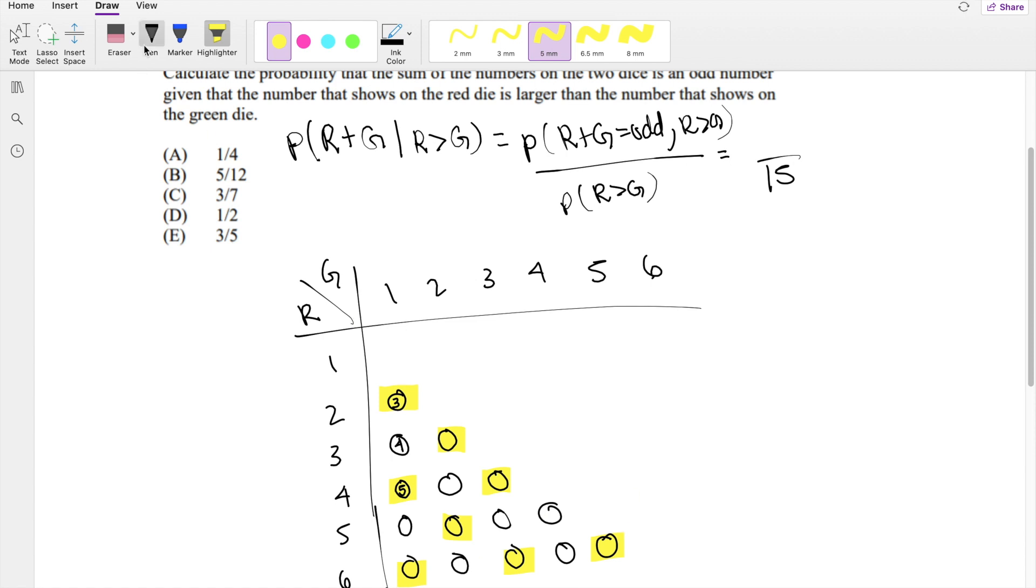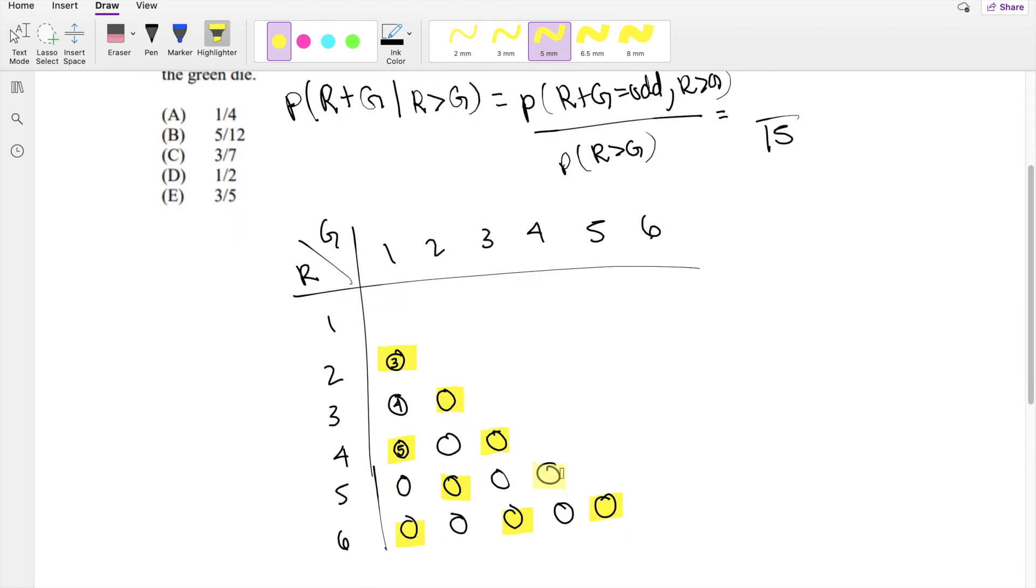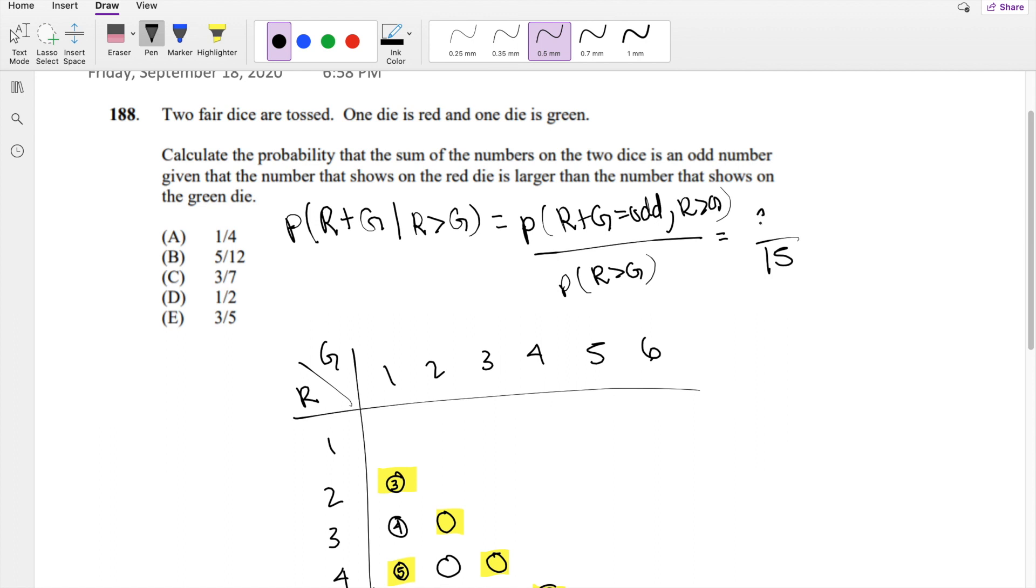6 plus 5 is 11. And then 5 plus 4 is 9. So we know that here, 1, 2, 3, 4, 5, 6, 7, 8, 9. So it's 9 of them here. 9. Which could be simplified to 3 over 5 or answer E.